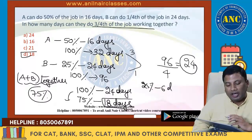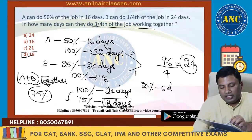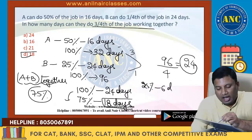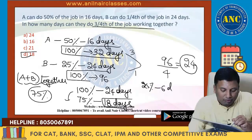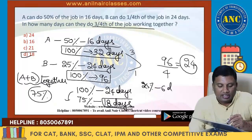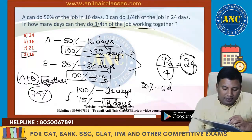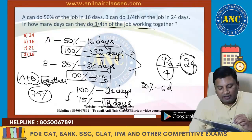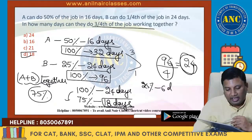Converting both to 100%: A does 50% in 16 days → 100% in 32 days. B does 25% in 24 days → 100% in 96 days. Working together: 96/(3+1) = 24 days for 100%. For 75%: it is 18 days. Answer is 18 days.